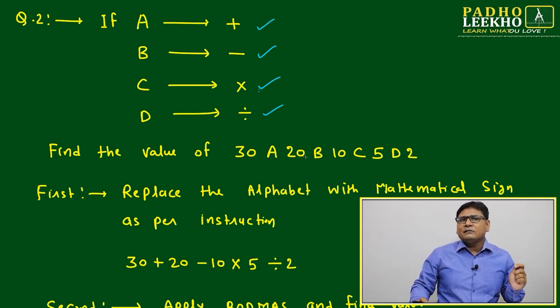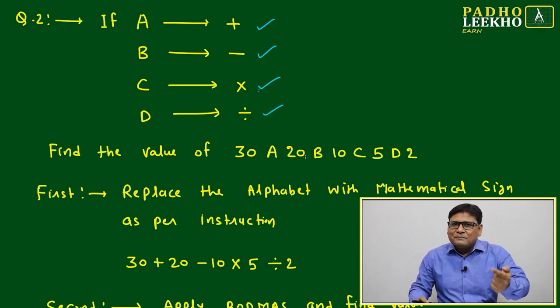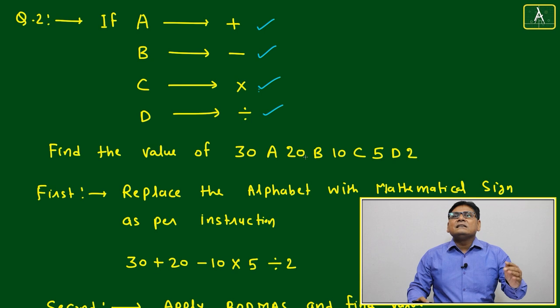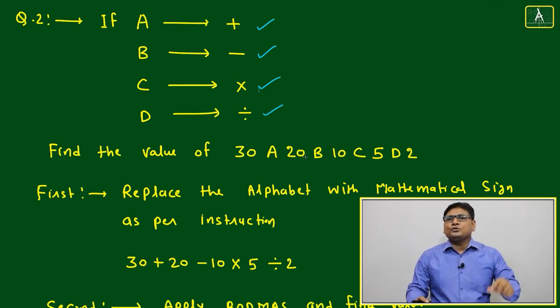And what is happening here? A is not representing only operation. A is representing operation with certain numbers and which will be acted on previous number, whatever given in the questions.